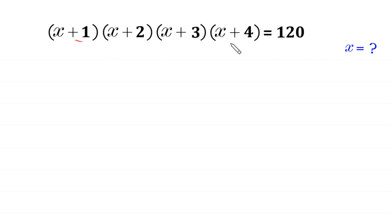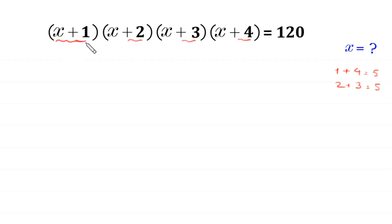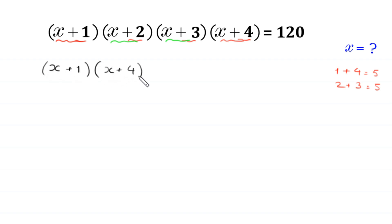Since 1 plus 4 equals 5, and 2 plus 3 equals 5, we pair (x+1) with (x+4) and (x+2) with (x+3), giving us (x+1)(x+4) times (x+2)(x+3) = 120.